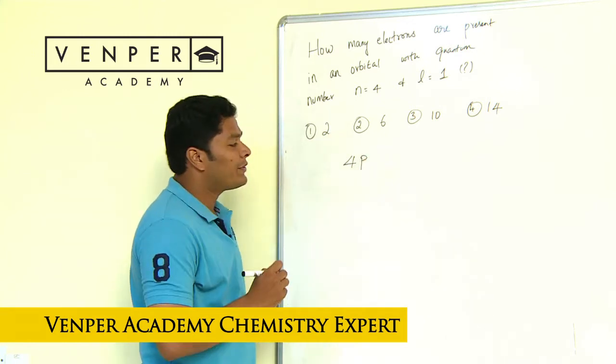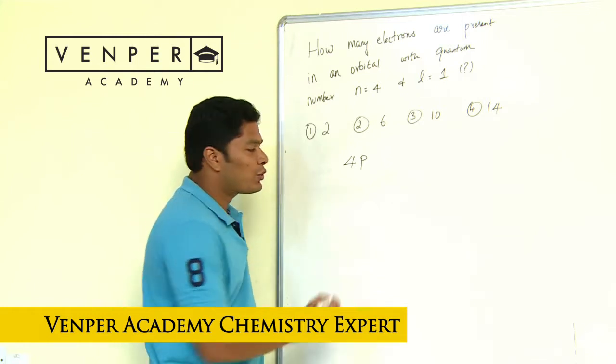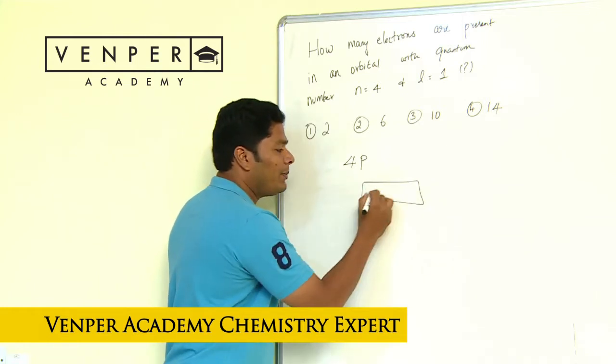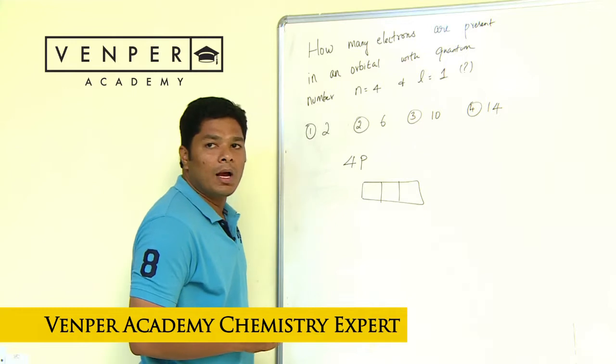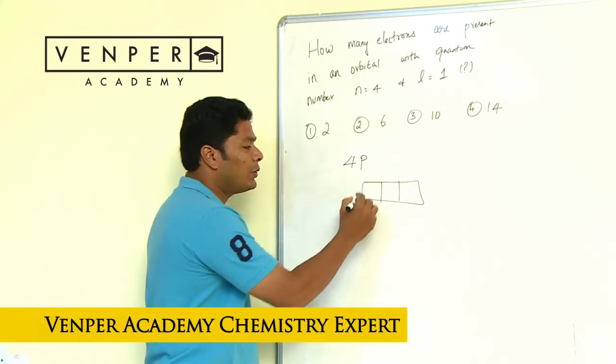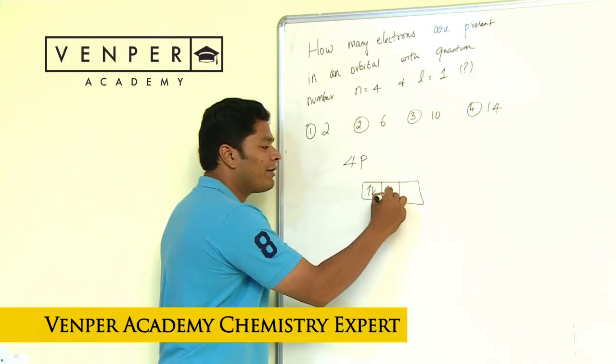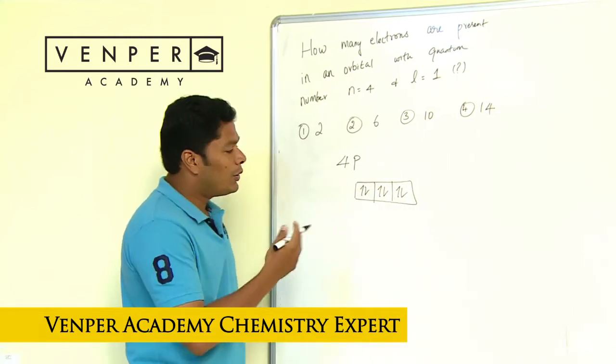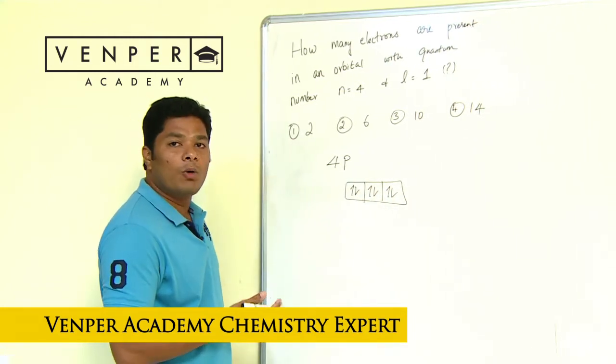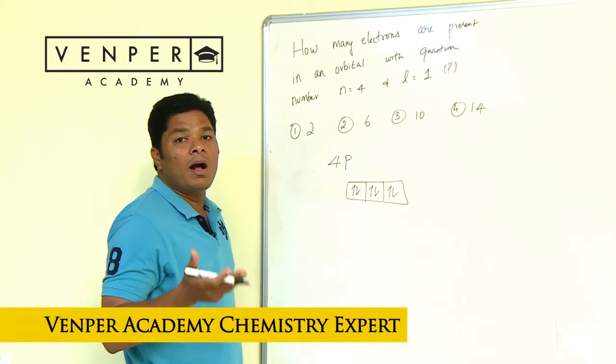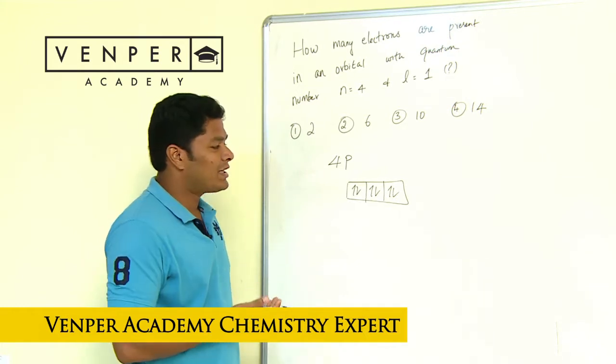For even state board students, you would know that a p orbital will be designed like this. And if you look into your Hund's rule and Pauli's exclusion principle, then you look at it - 4p orbital, how many number of electrons? Think for a second.